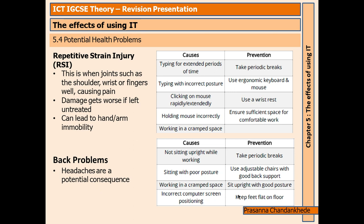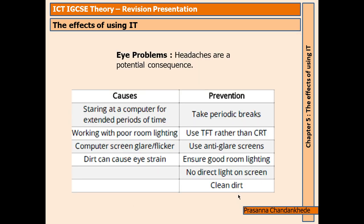Get your device — such as your laptop — to eye level so you don't have to look down or up while working. Eye problems: causes include staring at a computer for extended periods, poor room lighting, computer screen glare or flicker, and dirt causing eye strain. Prevention includes taking periodic breaks, using TFT rather than CRT screens, using anti-glare screens, ensuring good room lighting with no direct light on the screen, and cleaning the screen occasionally.